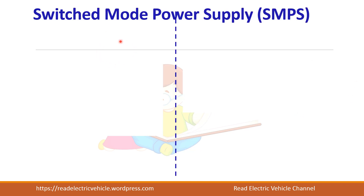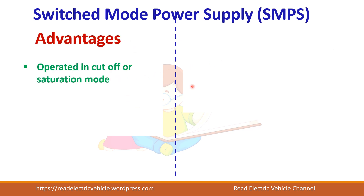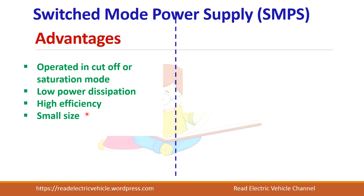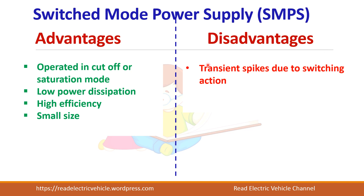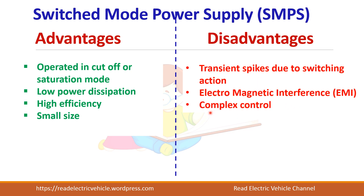Let us see the advantages and disadvantages of SMPS. It is operated in cutoff or saturation mode, so power dissipation is less, giving high efficiency, and the size is also reduced because of low power dissipation. The disadvantages are: operating at very high frequency naturally produces spikes, EMI interference will be present, and the control is complex.